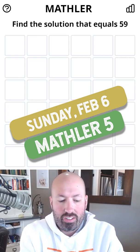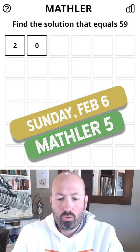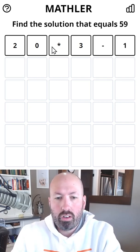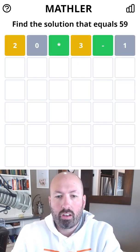All right, for today's Mathler, I'm going to start with 20 times 3 minus 1 because that will give us a 0, 1, a 2, and a 3, so I think that'll help a lot.